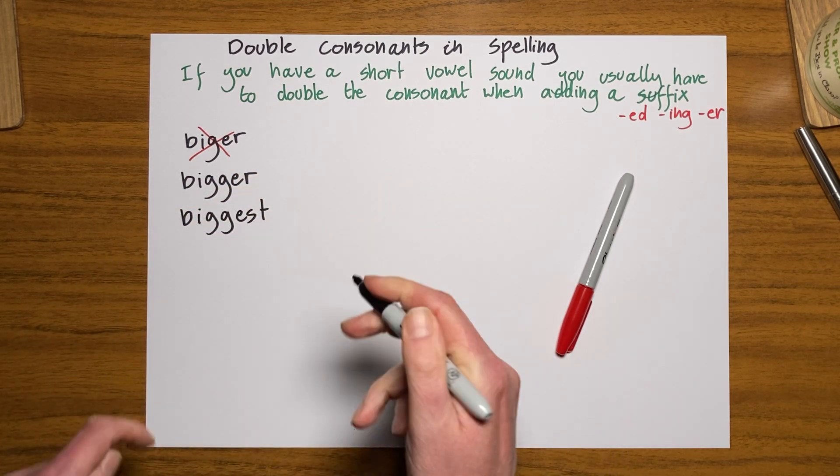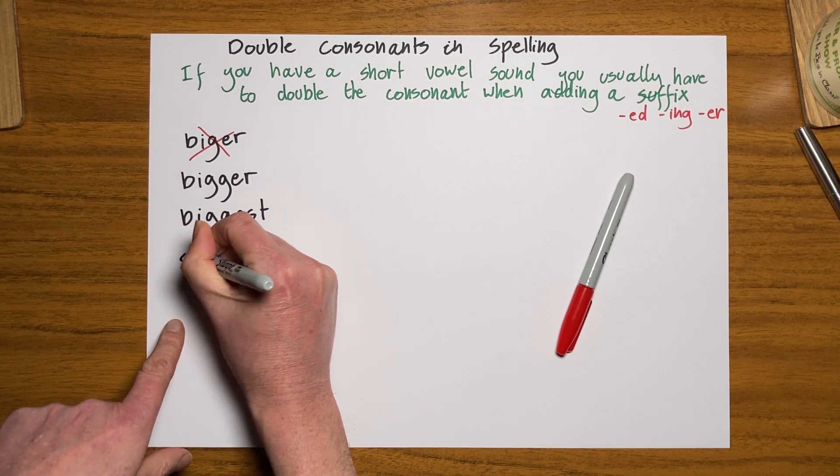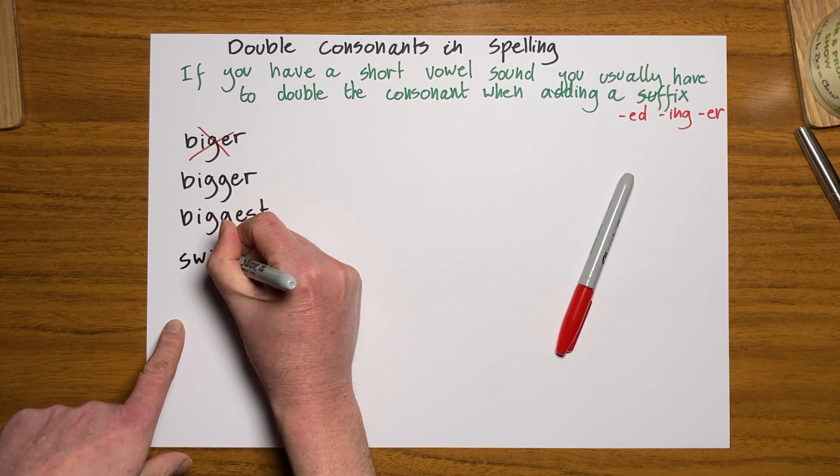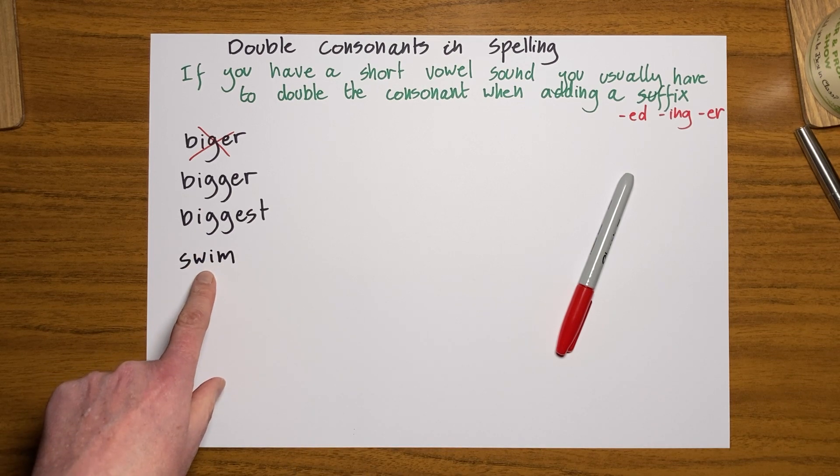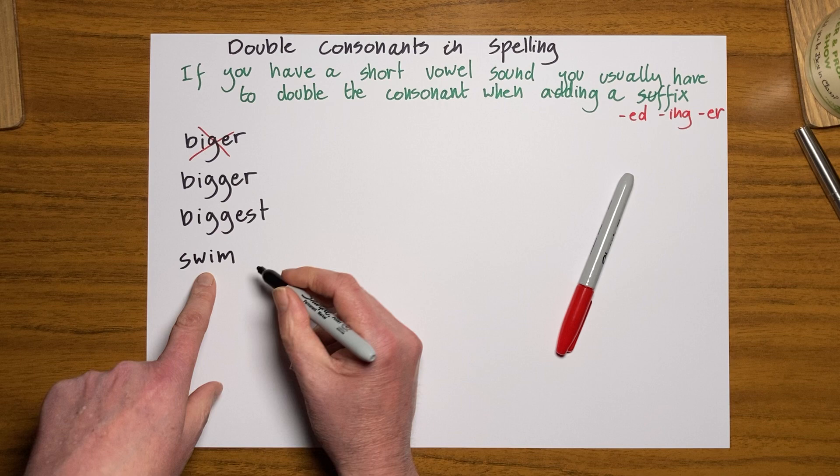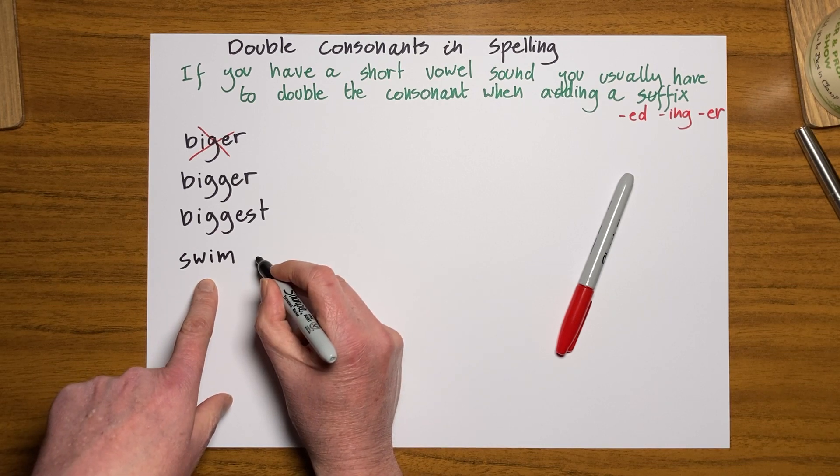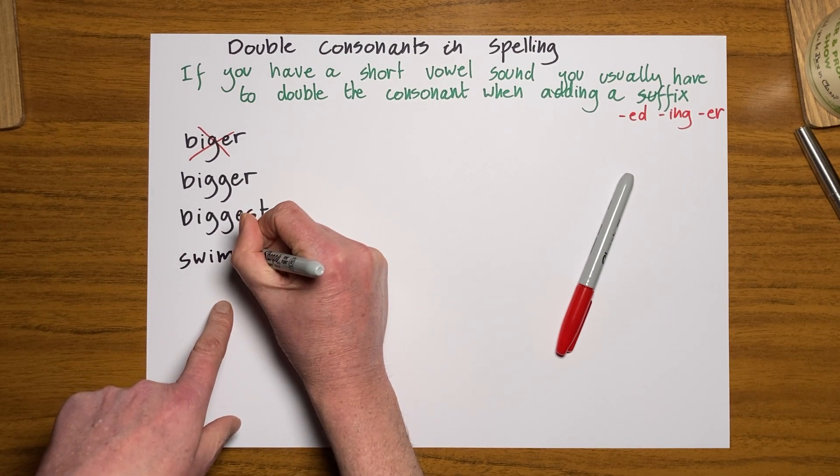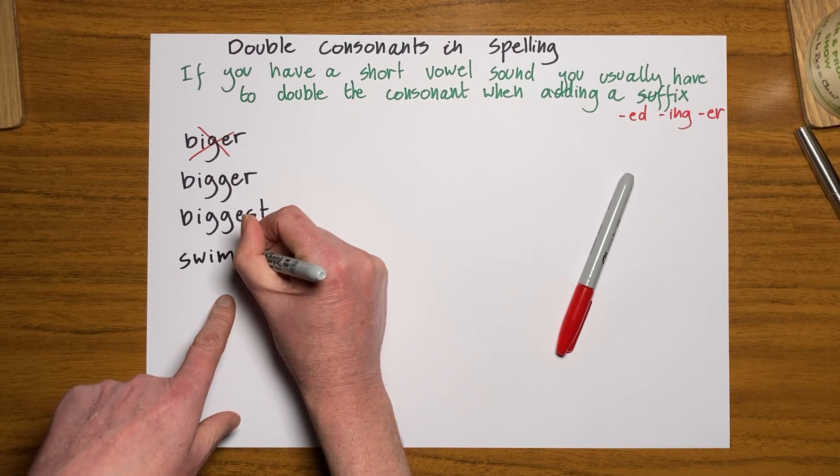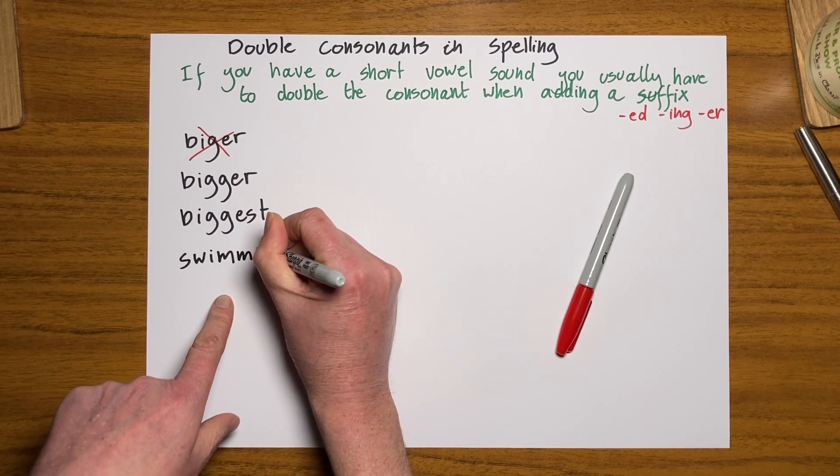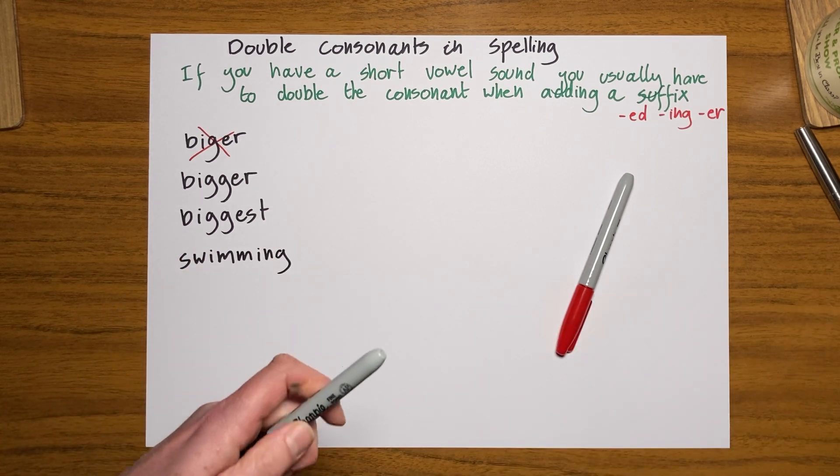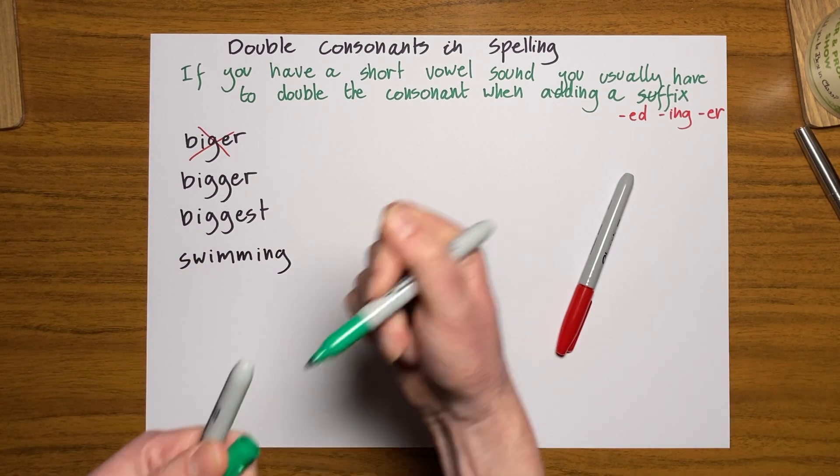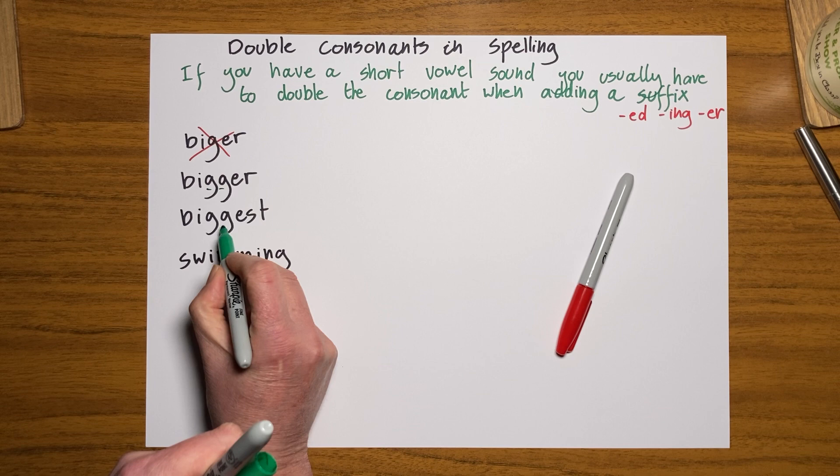Now lots of children like to swim. And it's the same. Notice that this is swim with a short I sound. It doesn't say swine. So if I just add ING, I'm going to be swining. I need to double the consonant before adding the suffix on the end. So let me just underline these double consonants.